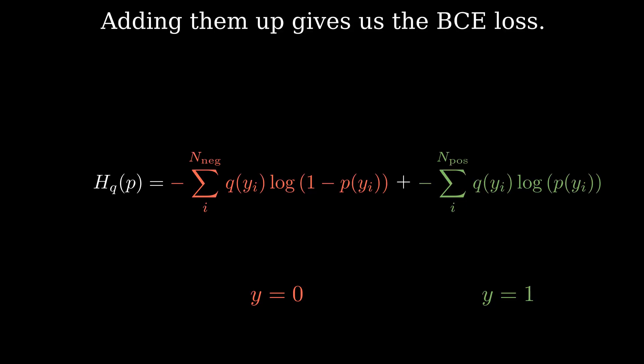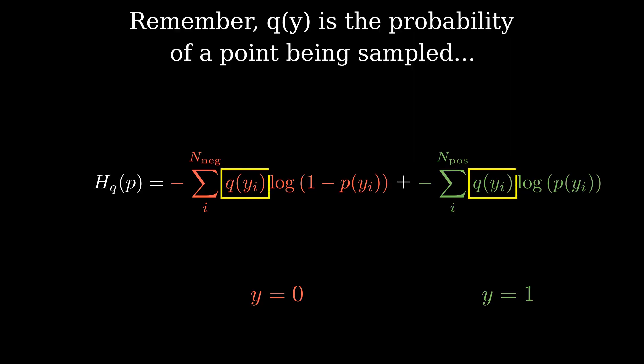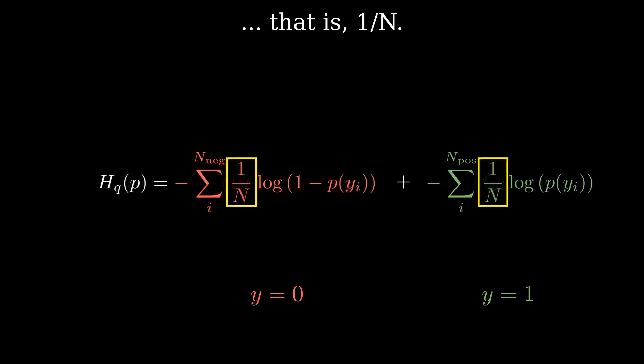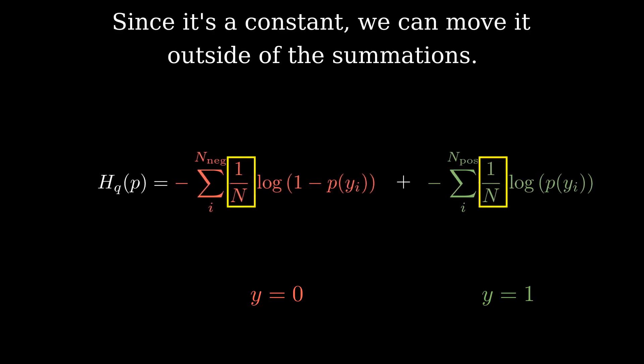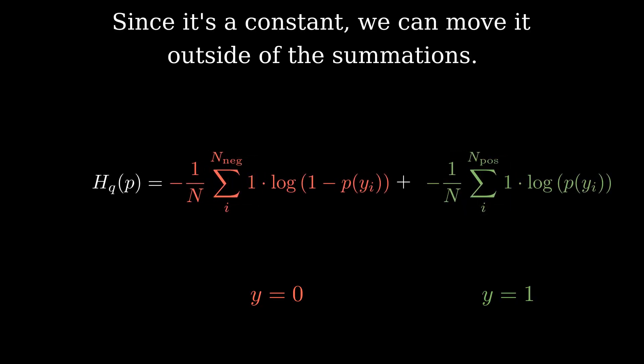Now, let's work our way back to the typical expression of BCE loss. Remember, q of y is the probability of a point being sampled. It is the weight given to each computed error. That is, 1 over n. Since 1 over n is a constant, we can move it outside of the summations.